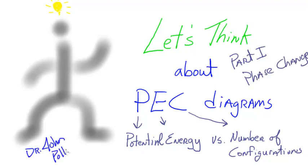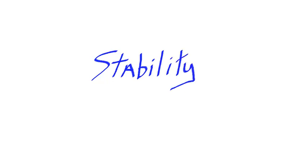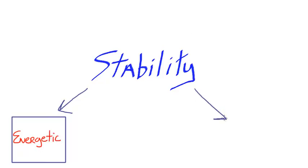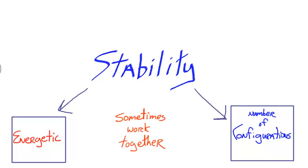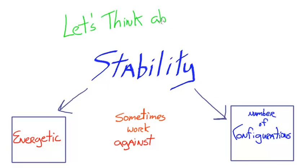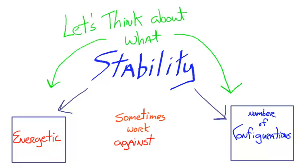The Peck Diagram plots potential energy of a system versus the number of configurations the system can access. When building explanations or making predictions about chemical or physical change, chemists tend to think about this concept of stability. Stability can be thought of as being comprised of two factors: the energetic stability of a state or a system, or what I'll refer to as the configurational stability — the number of configurations a system can access. Sometimes these two factors work together towards overall stability, but sometimes they work against each other.